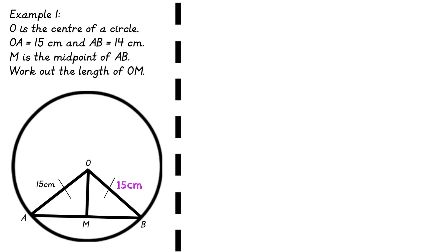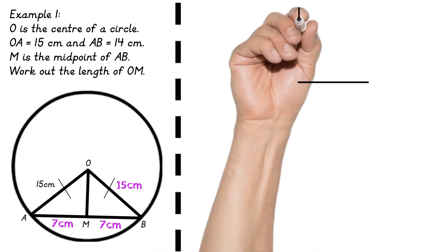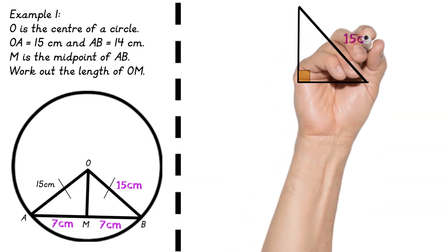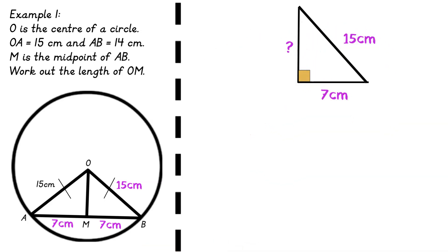This says work out the length of O to M. Now I'm going to take that triangle out of the question because I know OMB the angle is 90 degrees. So if I take out all the information the 15 centimetres and the 7 I'm looking for that perpendicular height. It's just Pythagoras. So label the three sides. Make sure the hypotenuse is C. Apply the subtraction Pythagoras theorem and substitute your values into this theorem.